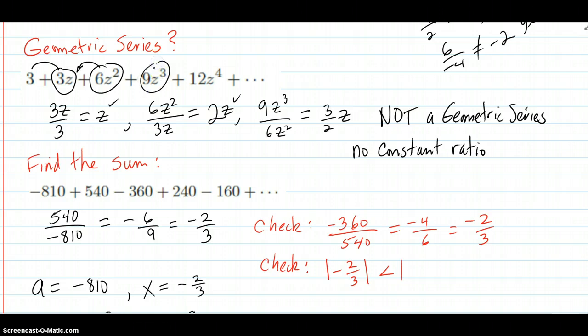And sure enough, 9z cubed over 6z squared. So the series is not a geometric series. It's not a geometric series because there is no constant ratio.